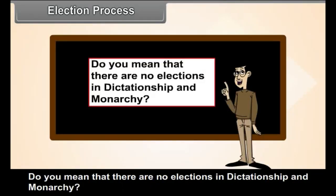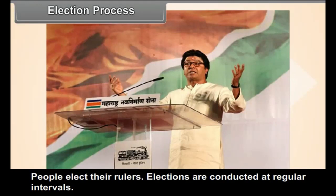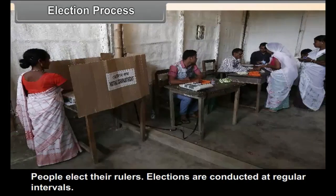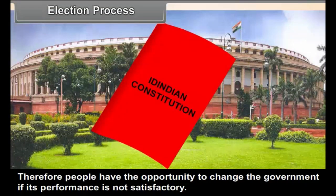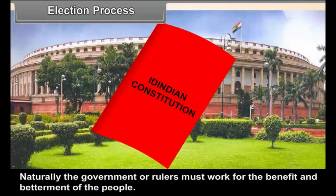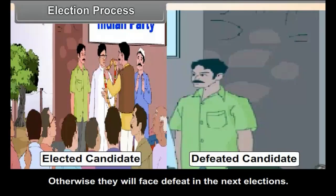In dictatorships and monarchies, elections are not held. Democracy is a form of government where people have the real power. People elect their rulers and elections are conducted at regular intervals. Therefore, people have the opportunity to change the government if its performance is not satisfactory. The government or rulers must work for the benefit and betterment of the people, otherwise they will face defeat in the next elections.